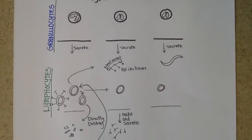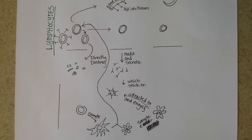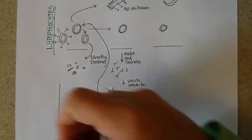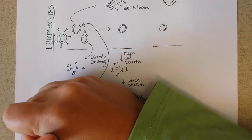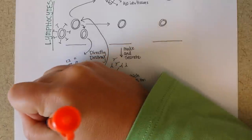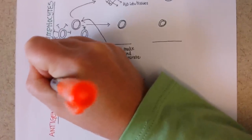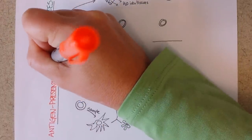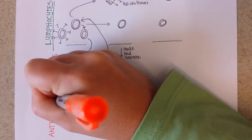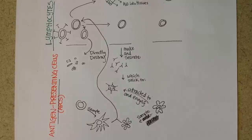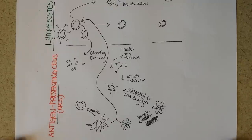The third group is called antigen presenting cells, or APCs. Like their name sounds, they are going to present antigens — little pieces from cells and things that they run into — to other white blood cells to see if we should attack or not.